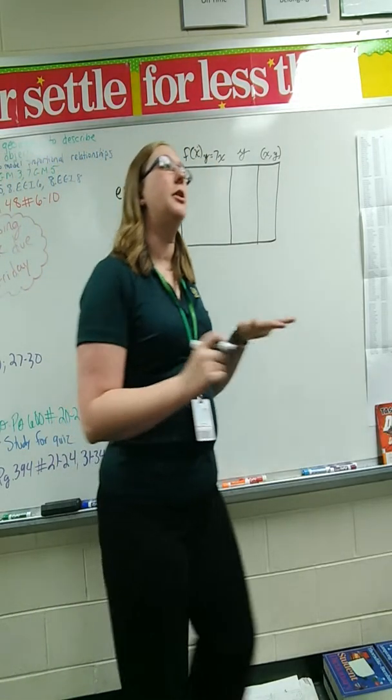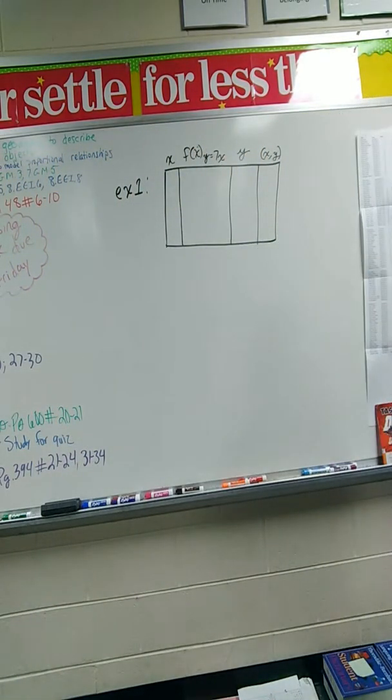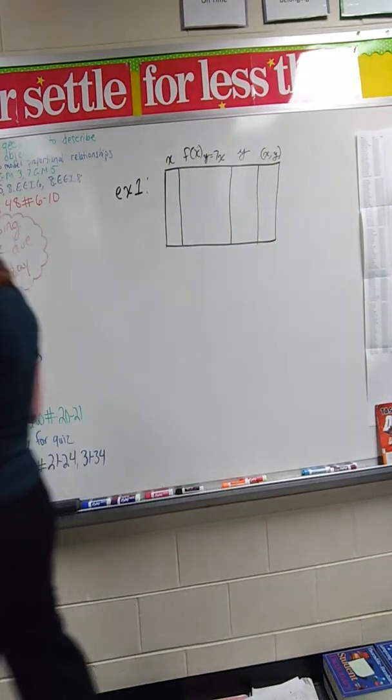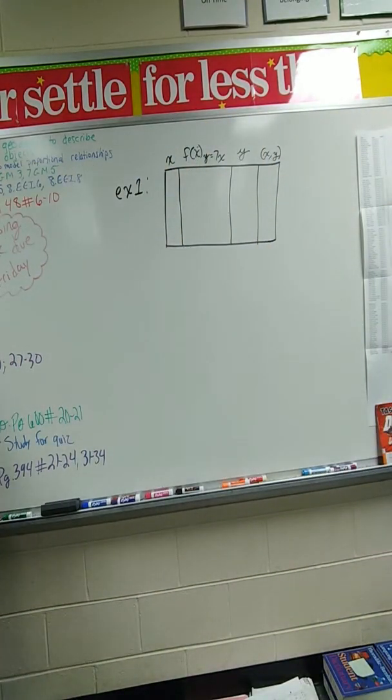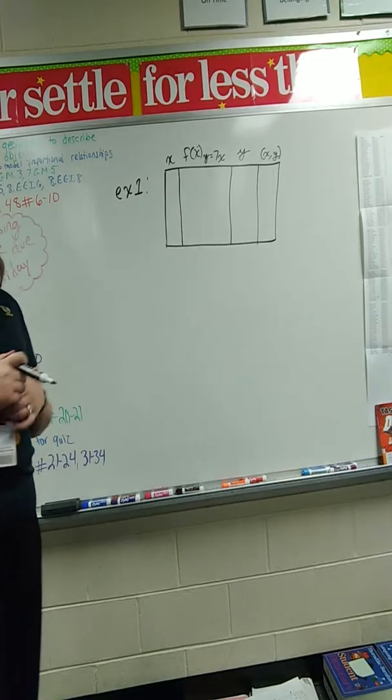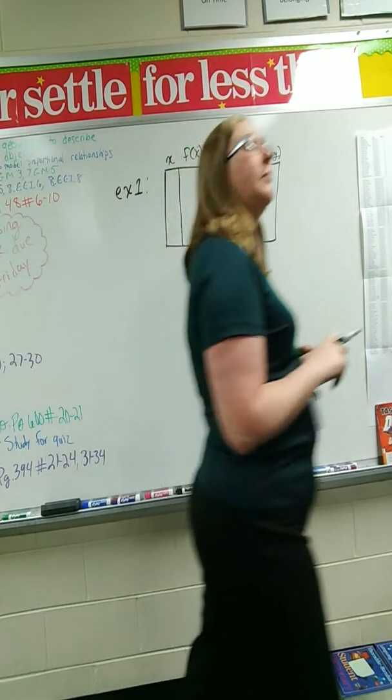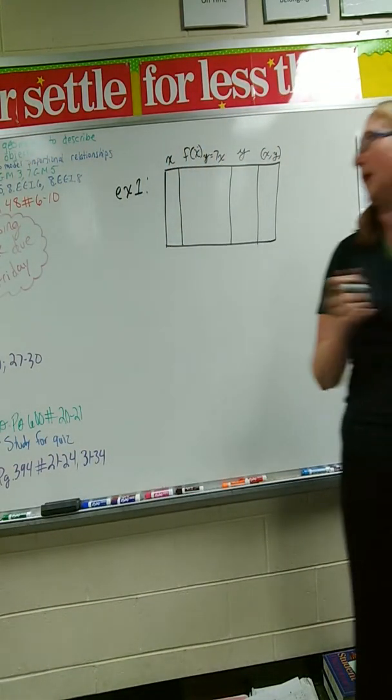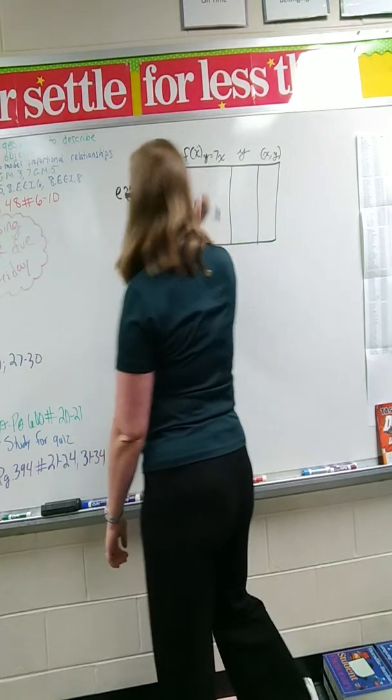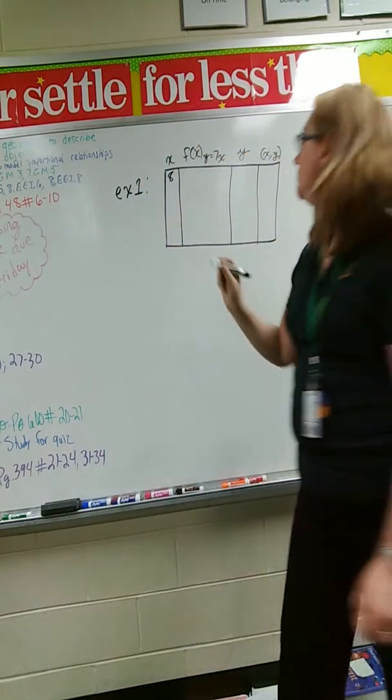So in this instance, my function, that f of x, is going to be y equals 7x. So in this situation, we're using the equation y equals 7x, so we're not using function notation. All right? So in the book they use the values negative 1, 0, 1, 2. We can use any values we want. So I need numbers, I need four of them, they need to be different. Yes ma'am? Eight. Eight. Twelve.